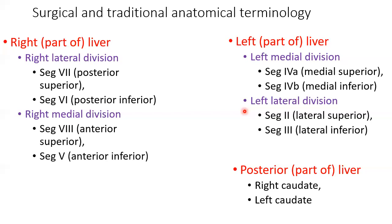According to surgical and traditional anatomy terminology, the right part of the liver is divided into right lateral and right medial divisions by the right hepatic vein, and also divided into superior and inferior by the right portal vein. The left part of the liver is divided into left medial and left lateral divisions by the left hepatic vein, and into superior and inferior by the left portal vein.